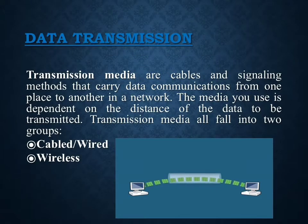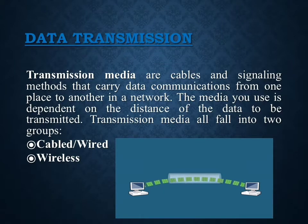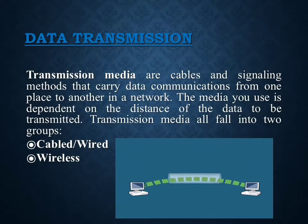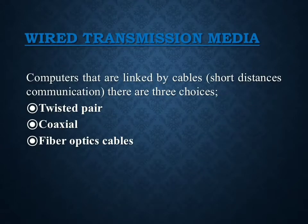Transmission media are cables and signaling methods that carry data communication from one place to another in a network. The media you use completely depends on the distance of the data to be transmitted. Transmission media falls into two groups: wired or cable, and wireless transmission.